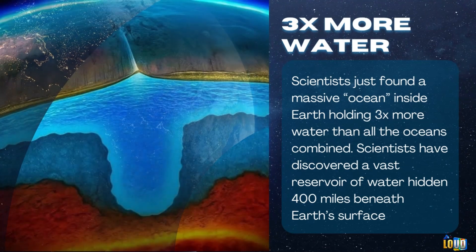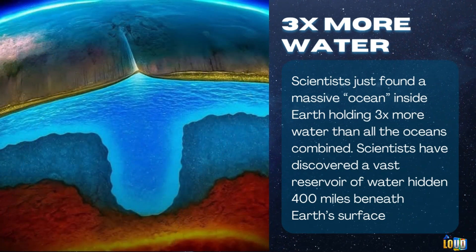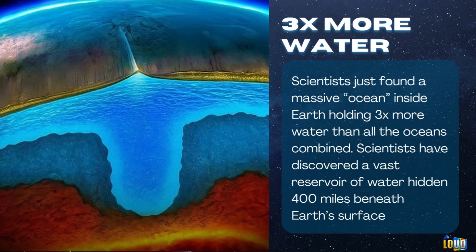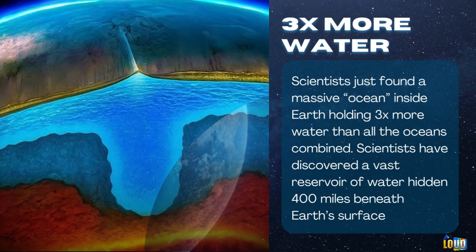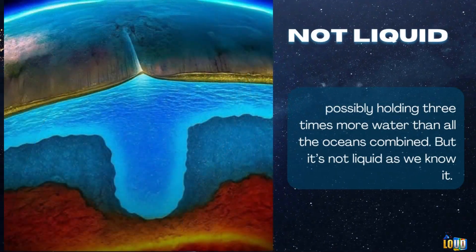Scientists just found a massive ocean inside Earth holding three times more water than all the oceans combined. Scientists have discovered a vast reservoir of water hidden 400 miles beneath Earth's surface, possibly holding three times more water than all the oceans combined.